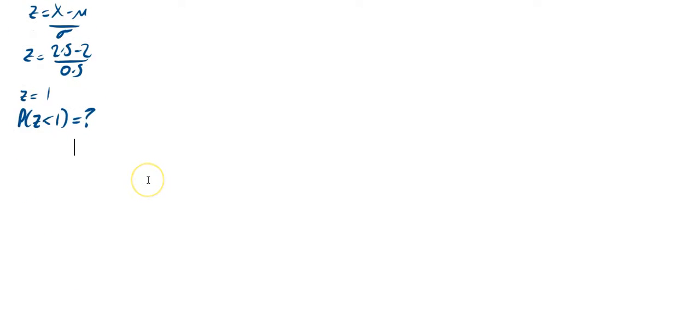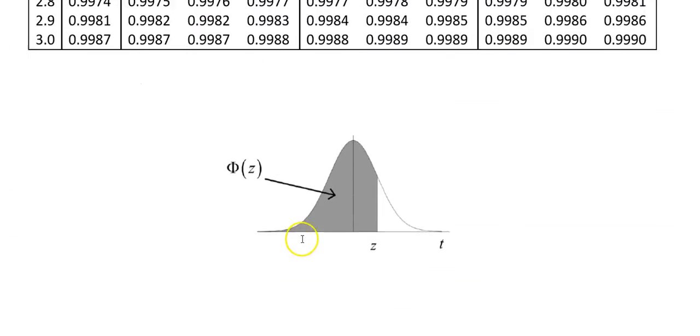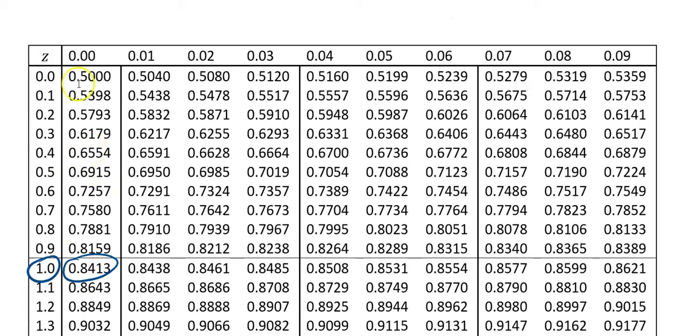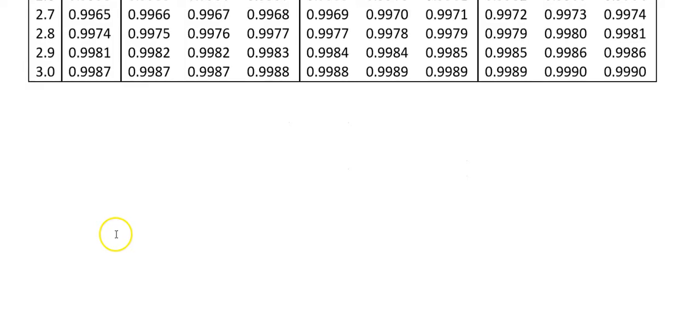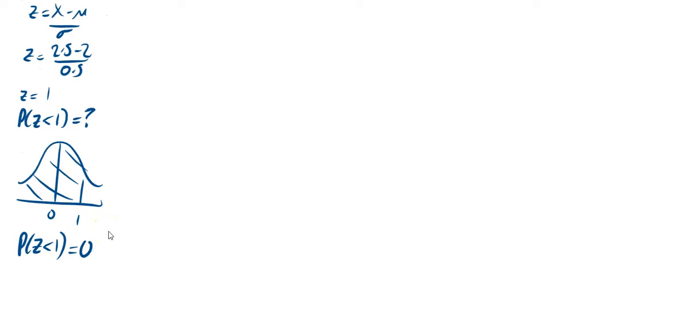We'll do a diagram and then we'll get started using our tables. On your diagram, do your bell shape diagram. There's your 0, there's your 1 and it's less than, so it's this shaded bit. This is perfect because this is exactly the way our tables work. Go back up and look for your 1 on your tables. Z equals 1.00, so 1.0 and then the first column for the extra 0, and it's 0.8413. That's part one done.